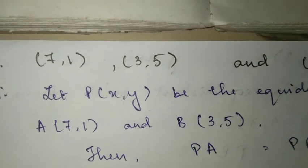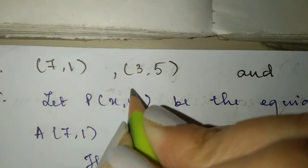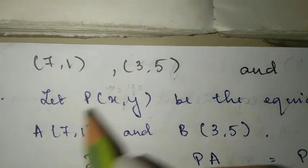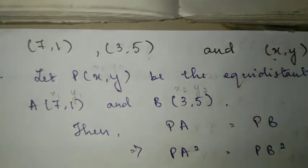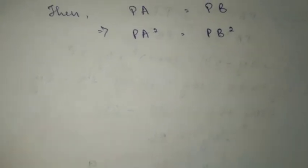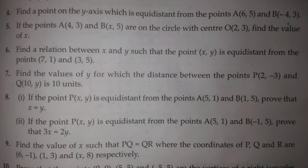Now P is your point x, y. Use the distance formula for PA and PB. The squares will cancel, leaving you with x and y terms versus the numbers, and you will find out the relationship between x and y, all right?